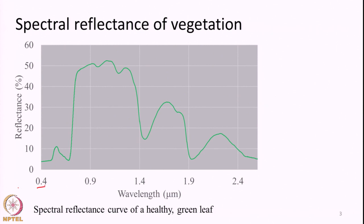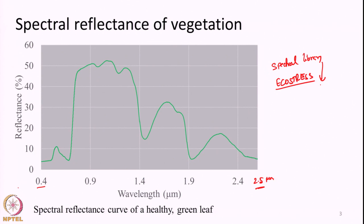Here the x-axis has wavelengths ranging from 0.4 to roughly 2.5 micrometers, and reflectance is plotted along the y-axis. This is from observed data in laboratory measurements, taken from a spectral library called the ECOSTRESS library. You can search for it on the internet and easily access the spectral library. It contains reflectance as a function of wavelength for hundreds of earth surface features. You will get it in the form of a table, and you can just plot it and analyze how different features look. I will use this spectral library to a good extent in this series of lectures.